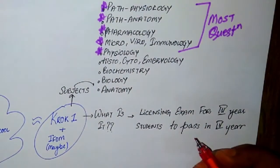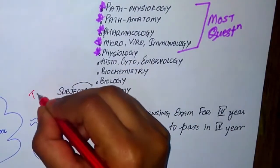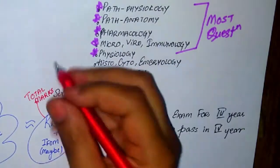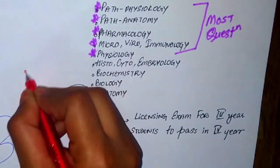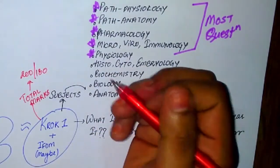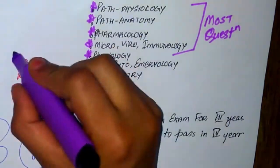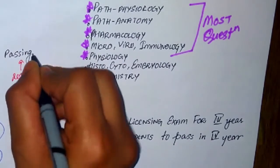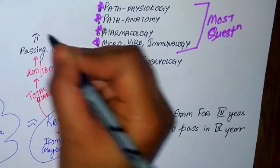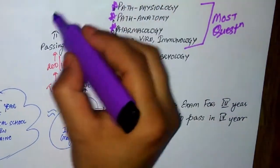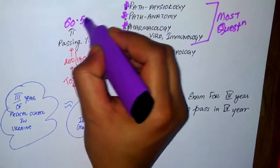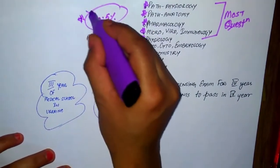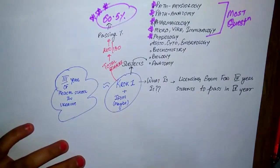Before 2019, there used to be 200 MCQ questions in the question paper, each containing one mark. But in 2019, for the first time students had 180 questions and we're not sure how much each question contained. But the passing percentage has always been the same: 60.5%. If you do not score a minimum of 60.5%, you will have to repeat the examination.